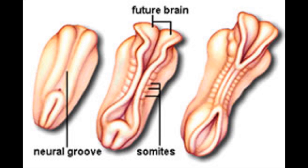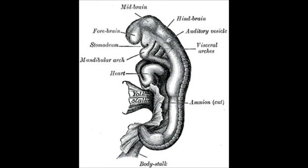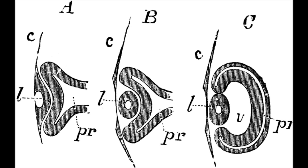Embryology of the Eye. The central nervous system is developed from the neural groove which invaginates to form the neural tube running longitudinally down the dorsal surface of the embryo. At either side from the lateral aspect of the anterior portion of the structure, which is the precursor of the forebrain, a thickening appears at an early stage called the optic plate, which then grows outwards as a diverticulum towards the surface to form the primary optic vesicle.